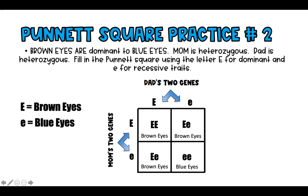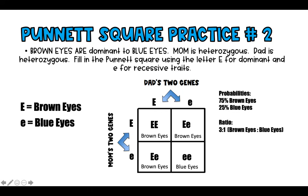In the third square, two recessive traits give us blue eyes. The fourth square is brown eyes again. Looking at all outcomes: three squares give the dominant trait (brown eyes) and one gives blue eyes. Since each square represents 25%, there's a 75% chance the child will have brown eyes and a 25% chance of blue eyes. The ratio is 3:1, dominant to recessive.